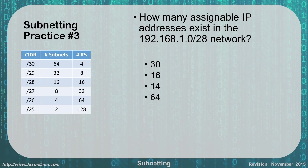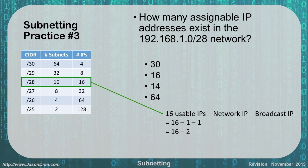Our final problem, problem number three, is the same type: we want to find the number of assignable IP addresses for a 192.168.1.0/28 network. For a /28 network, we have 2 to the 4th number of IPs, minus 2 for the broadcast and the network host. 2 to the 4th gives us 16, minus 2 gives us 14, and that's our answer.